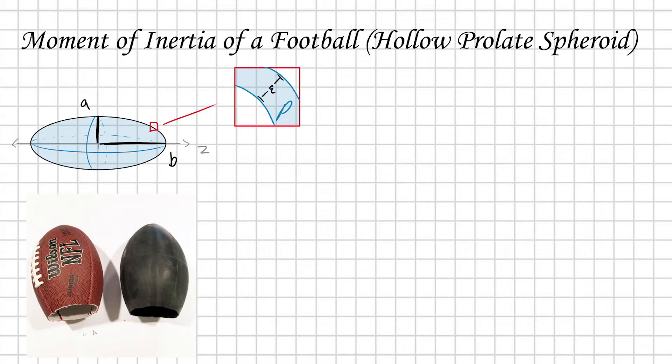Our football, as I'm showing in this picture, is more or less hollow. I've blown up the outer section of our prolate spheroid, and we can see it has some small thickness, which I'm calling epsilon. This material has some mass density rho, and we're going to get the moment of inertia about this z-axis.